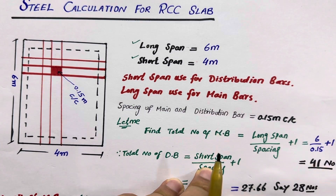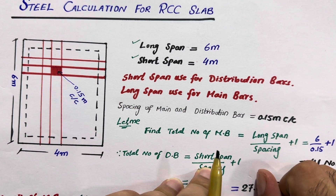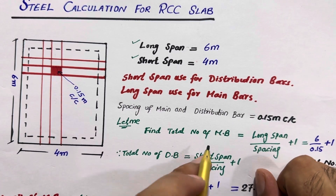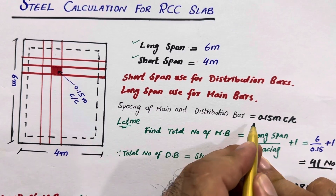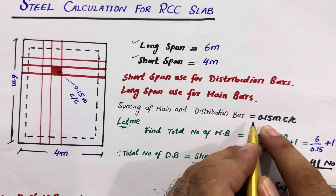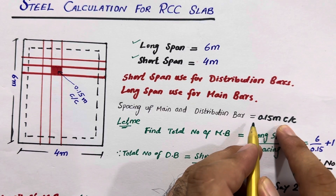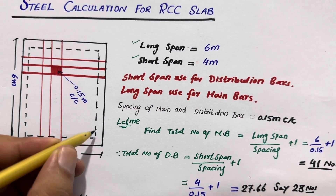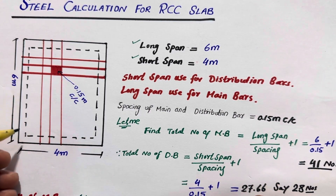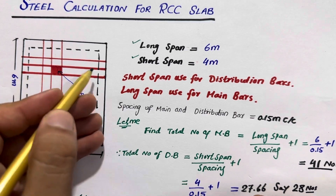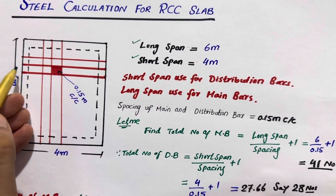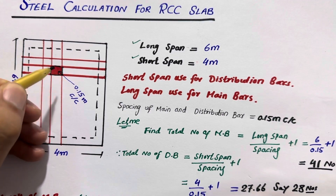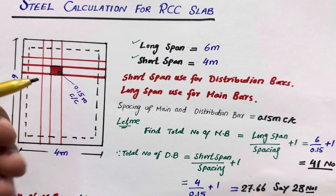Main bars should be provided under the distribution bars. The spacing of main bars and distribution bars is 0.15 meter center to center. The dotted lines show the floor beam, and the red lines show the main bars and distribution bars. The spacing for both is 0.15 meter, or six inches, center to center.